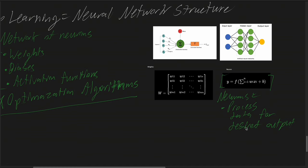Input data is fed into the input layer, consisting of as many neurons as there are features in the dataset. Each input neuron sends its signal to the neurons of the next layer, which could be a hidden layer or the output layer directly. Every neural network is comprised of three components: the input layer, one or more hidden layers, and the output layer.